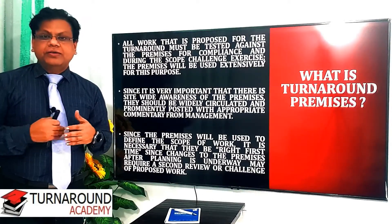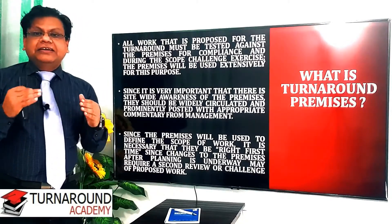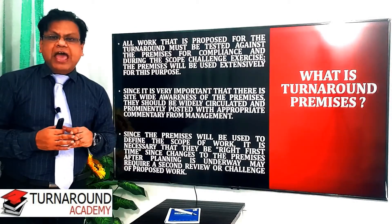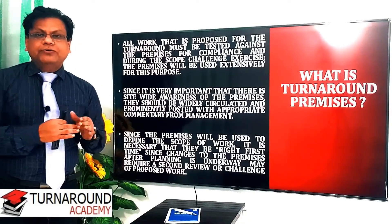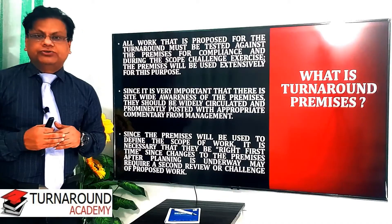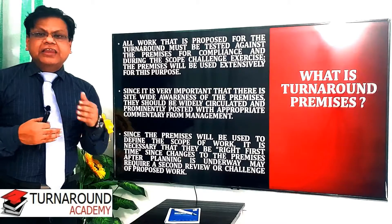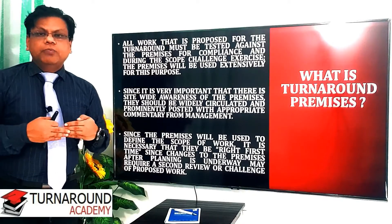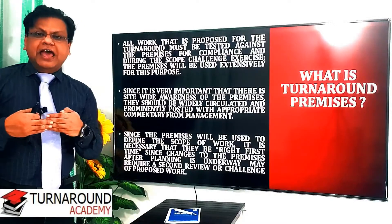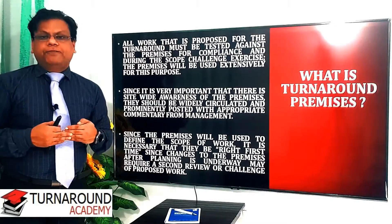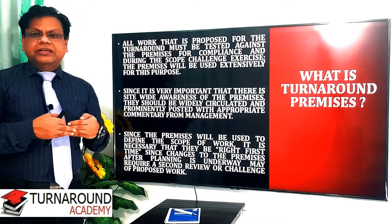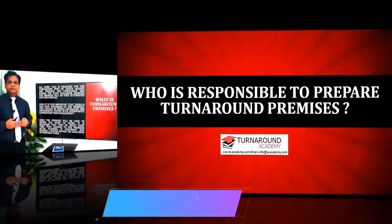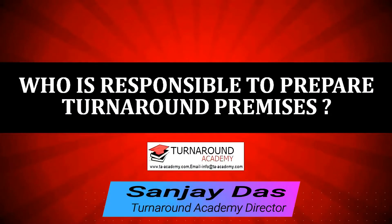Turnaround premises are generally released 18 months prior to the feed-out date, at which time you may have only 90% of the scope of work. Management will declare the budget and duration for the turnaround at that point. However, while doing detailed planning, you may find that with the given budget you will not be able to deliver all the scope of work, or the duration given in the premises may not be enough. In that case, you need to amend the turnaround premises accordingly.